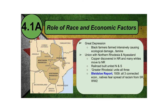Fast-forwarding to the Great Depression, black farmers farmed intensively, causing ecological damage and famine. The United States experienced similar over-farming during the Great Depression. Black farmers struggled because they were already on the poorest land in the area to begin with, so the Great Depression just made life worse for black people.